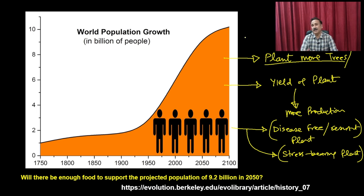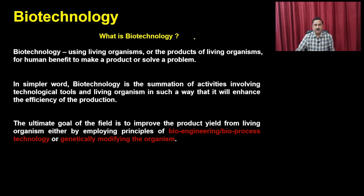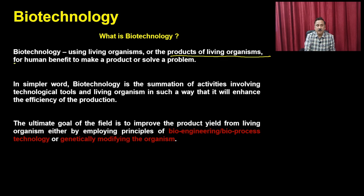Before getting into the details of recombinant DNA technology, let us discuss about biotechnology, its scope, and how biotechnology is helping society to develop different types of products. The first question is: what is biotechnology? Biotechnology is the technological application of biology where you use living organisms or their products for human benefit — to make a product or solve a problem.